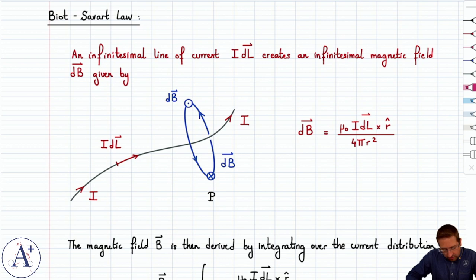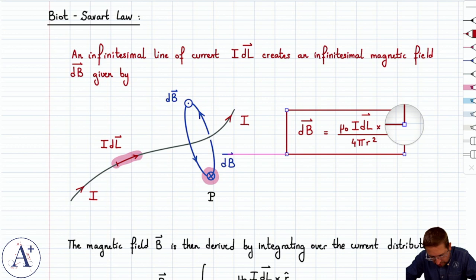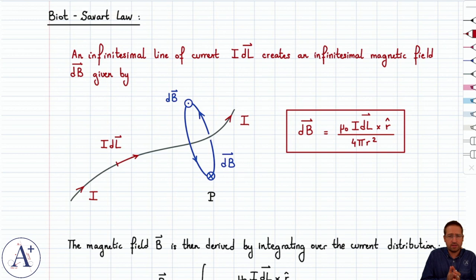What the Biot-Savart law does is tell you, for a given infinitesimal piece of current IDL, what the infinitesimal magnetic field dB is at a point P in space. To compute dB, you use the formula: dB = μ₀ I dL × r̂ divided by 4πr². The idea is that we find dB at a given point, and if we want the magnetic field created by the entire current distribution, then we integrate over the current distribution.